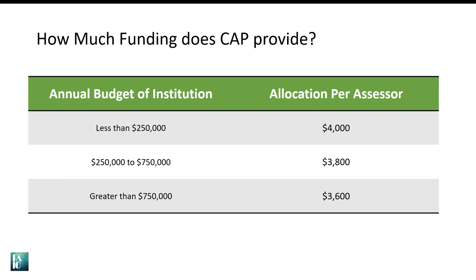Institutions that participate in the CAP program will receive an allocation toward their assessors' fees. Allocation amounts range from $3,600 to $4,000 per assessor based on the annual operating budget of the institution. For example, if your annual budget is $150,000, you would receive an allocation of $4,000 for a collections assessor and $4,000 for a building assessor. CAP is not a grant because funding never flows to participating institutions — instead, the allocation is paid by FAIC directly to the assessors. The institution will be responsible for paying the remainder of the assessment cost.